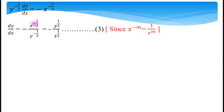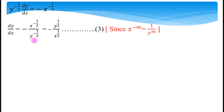We know x^(-m) = 1/x^m, so x^(-1/2) = 1/x^(1/2) and y^(-1/2) = 1/y^(1/2). Therefore dy/dx simplifies to -y^(1/2) / x^(1/2). Let us call this equation number 3.